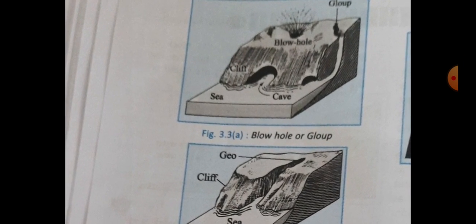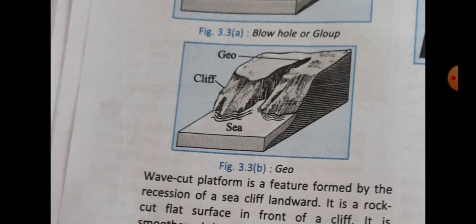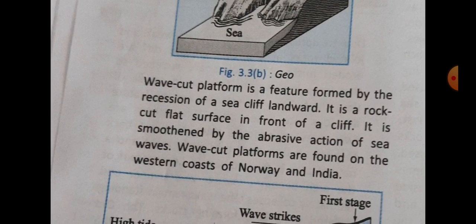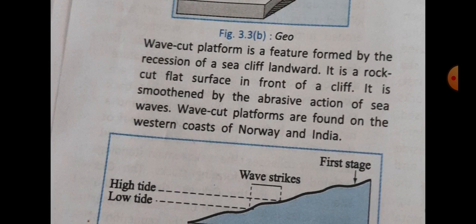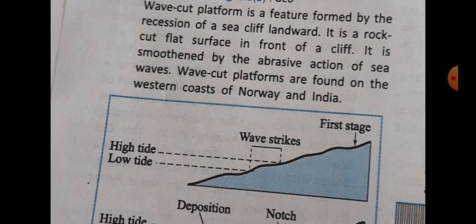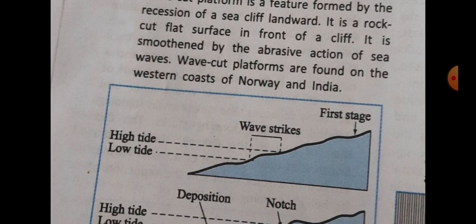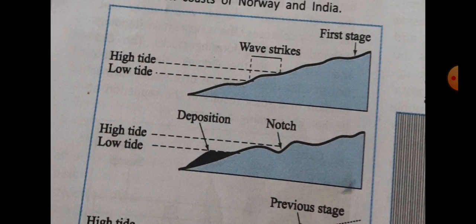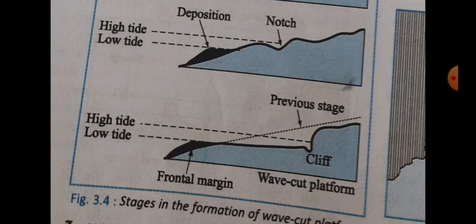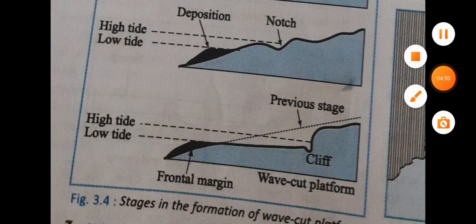Diagrams are given here — you have to draw these. A wave-cut platform is a feature formed by the recession of a sea cliff. It is a rock-scored flat surface in front of a cliff, smoothened by the abrasive action of sea waves. Wave-cut platforms are found on the western coast of Norway and India. Three diagrams are given here — you have to draw these.